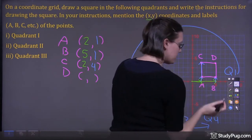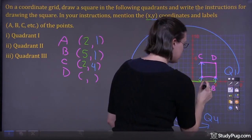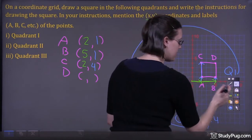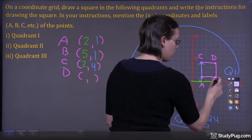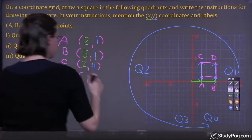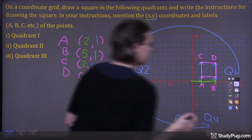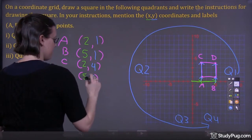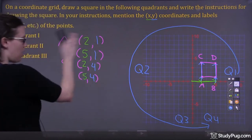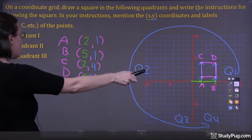Now we're going to focus on point D. Moving 1, 2, 3, 4, 5 to the right, and 1, 2, 3, 4 up — so 5 to the right and 4 up, giving us (5, 4). That's our coordinates for our square in quadrant 1.